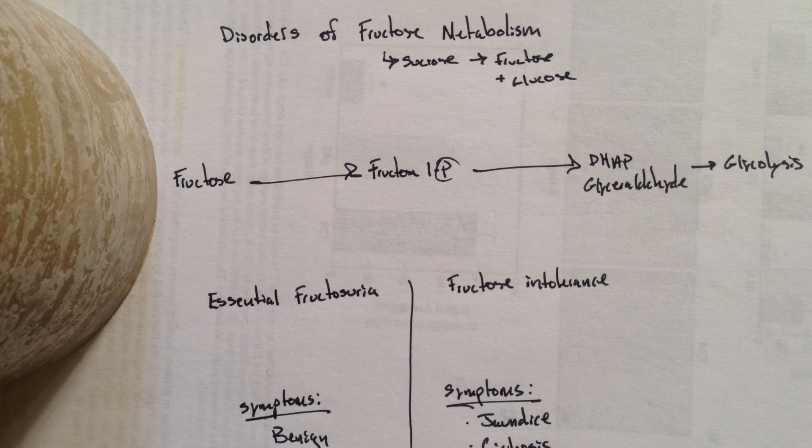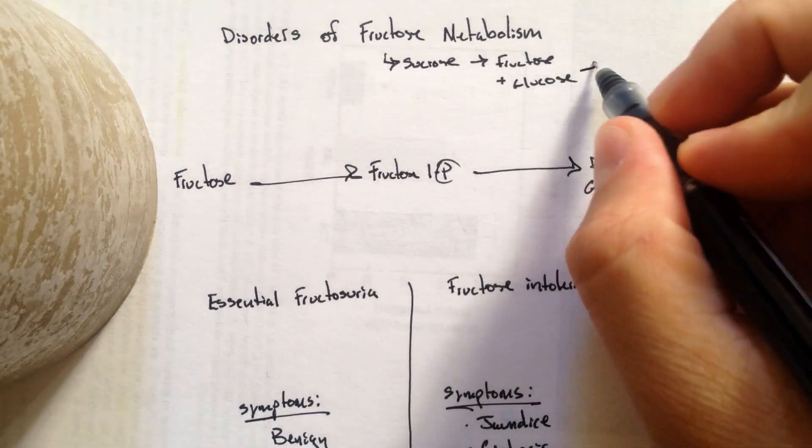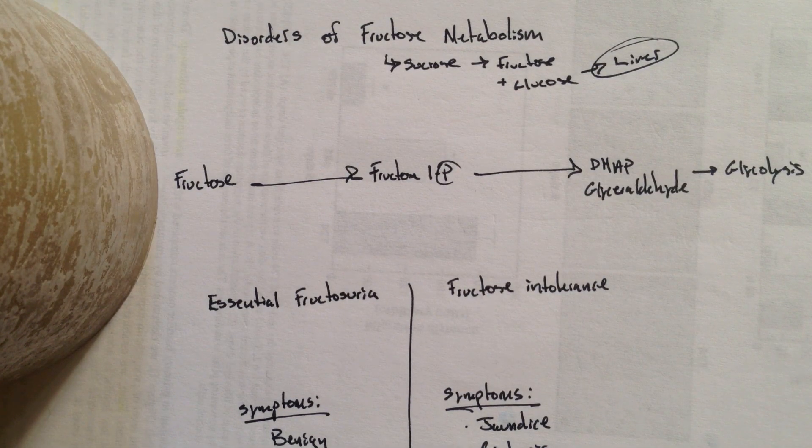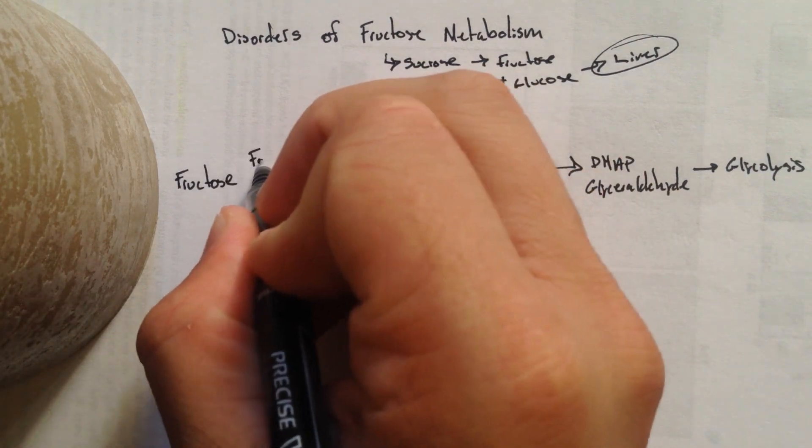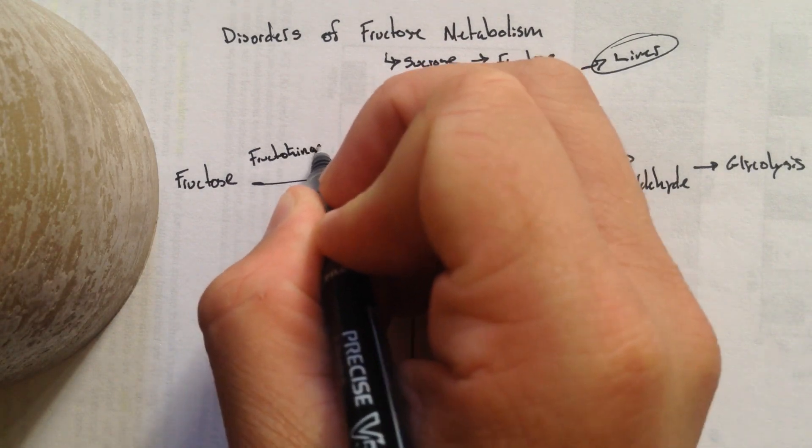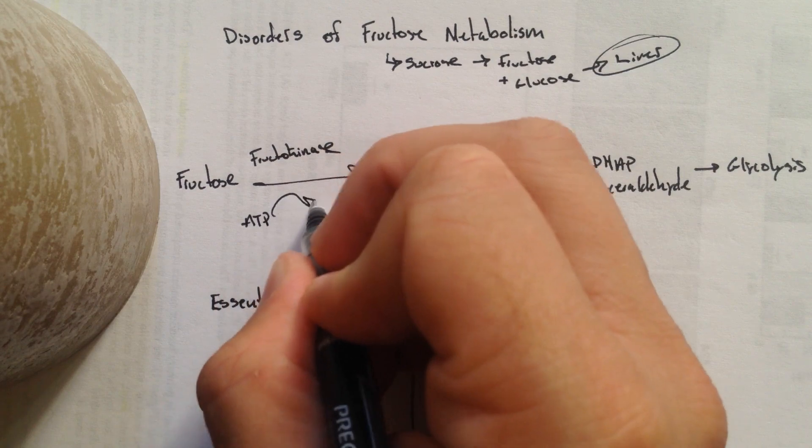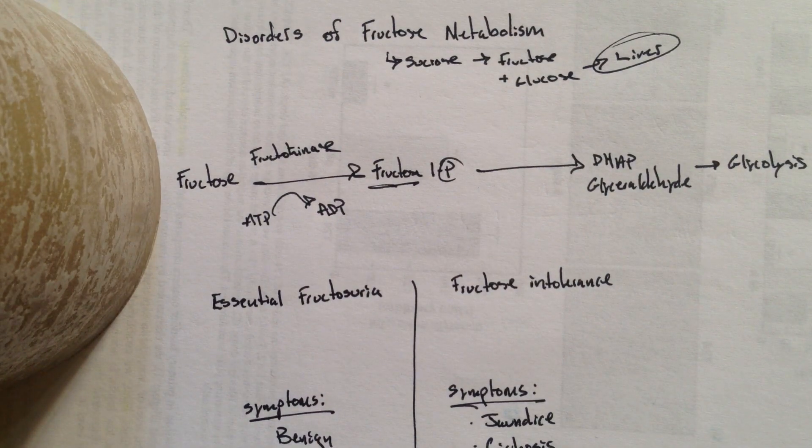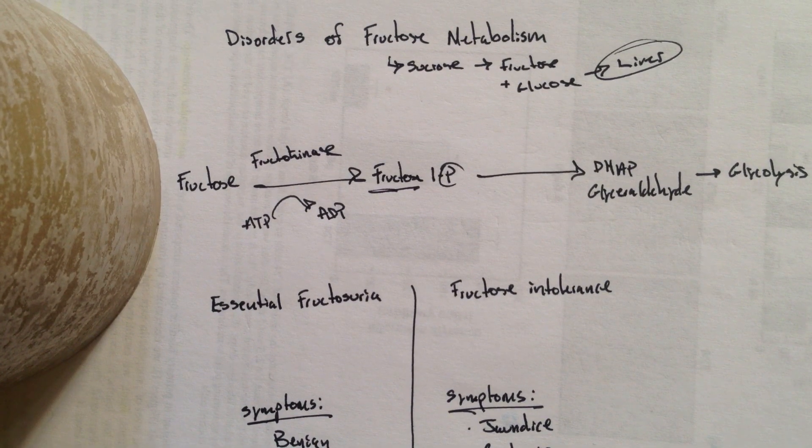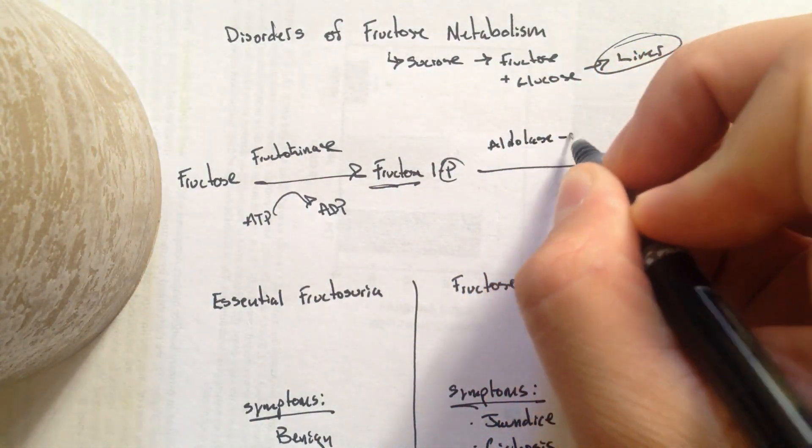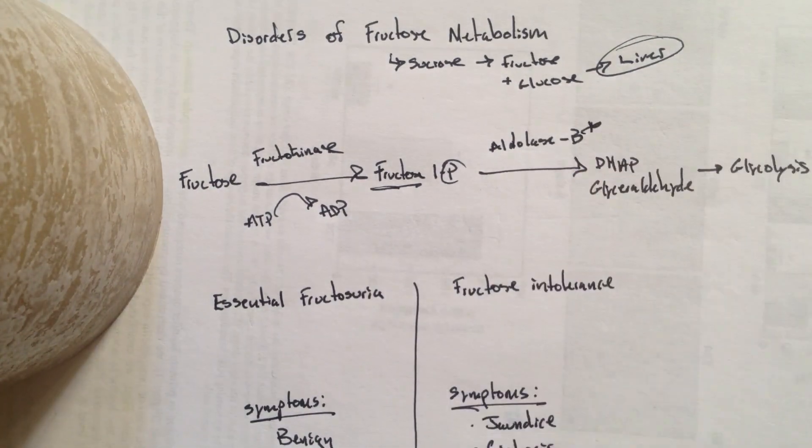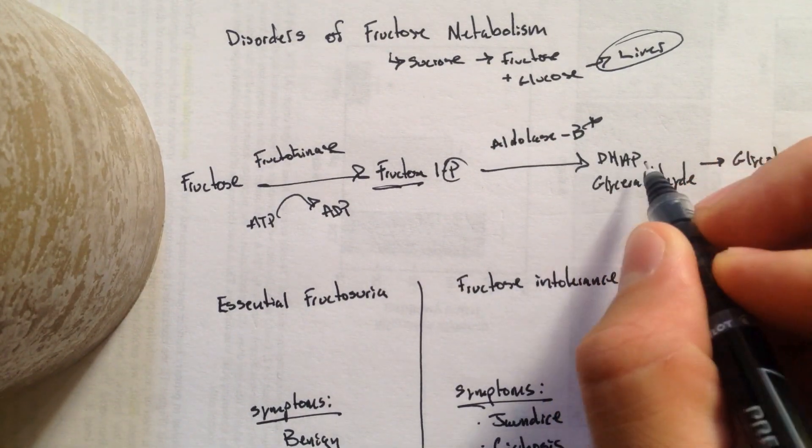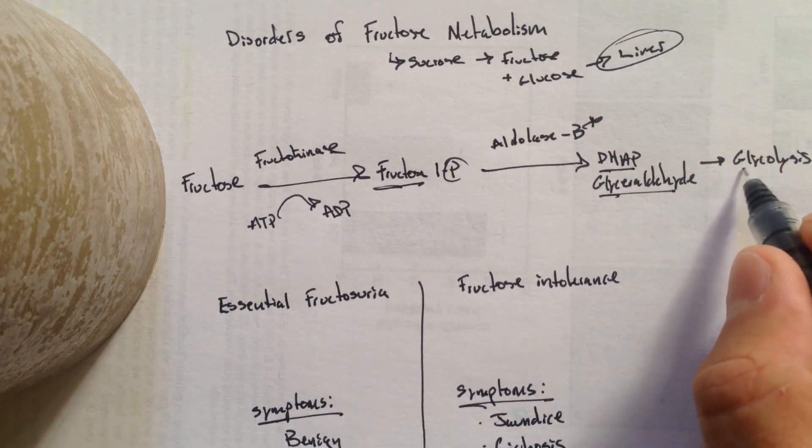So once you eat fructose, the major place where it's going to go is the liver. And that's important to know. So fructose will go to the liver. Fructose, once it reaches the liver, will encounter two enzymes. The first enzyme is fructokinase, which will add a phosphate. So we know that it'll use ATP. It'll add a phosphate to fructose and make it fructose 1-phosphate. So in the cell, it'll be fructose 1-phosphate, and it will encounter a second enzyme, which is aldolase B. Aldolase B, the second important enzyme, probably the most important enzyme of the two. So once it encounters aldolase B, it'll then be broken down into the metabolites DHAP and glyceraldehyde, which will eventually go into glycolysis.